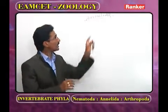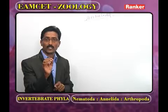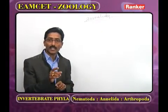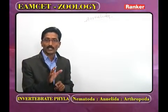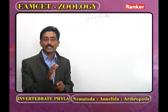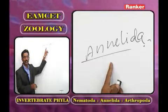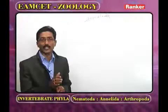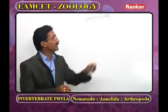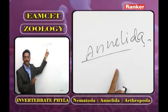In Annelida, all animals are triploblastic — three germ layers are present. A true coelom is present, meaning the coelom is externally and internally covered and protected by mesodermal epithelia. From the MCQ perspective, Annelida is the first eucoelomate phylum. In Annelida, Arthropoda, and Mollusca, the coelom is formed by splitting of the mesoderm — this is called schizocoelom. Annelida is also the first schizocoelom phylum.